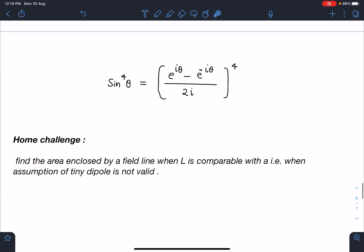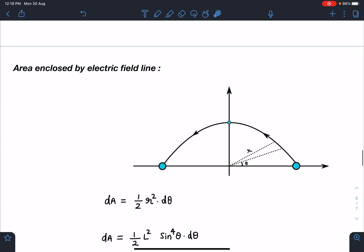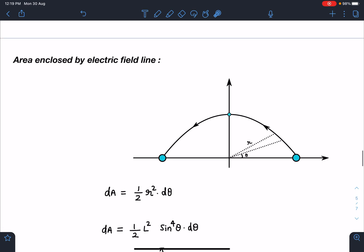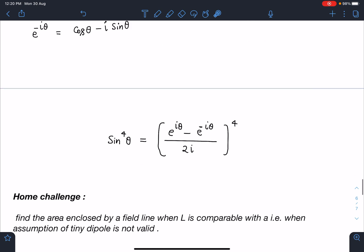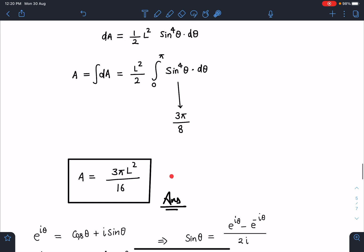Here the home challenge will be: find the area enclosed by the field line when L is comparable with a. That means I'm talking about area for this particular line when this distance is comparable with the distance between the two charges. In that case, you have to verify that when L is much larger compared to a, your answer matches with this one.